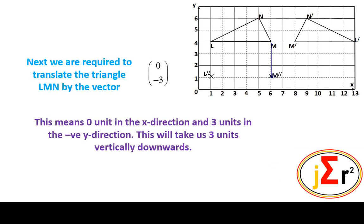the image of M is located 3 units vertically downwards from M. And completing the translation of the vertices, we have N and its image, 1, 2, 3 units vertically downwards.